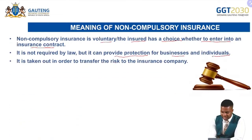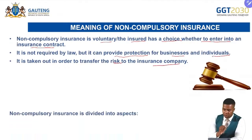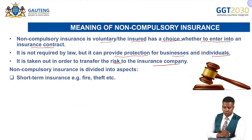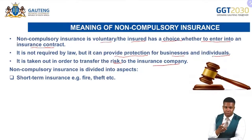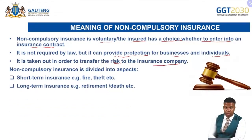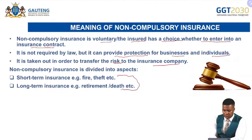Non-compulsory insurance is taken out to transfer the risk to the insurance company. It is divided into two types: short-term insurance — such as fire, theft, damage, hijacking, and burglary — and long-term insurance, which focuses on retirement or death. It is not compulsory for a business to cover itself against fire or theft, and it is not required by law. Long-term insurance for retirement is also not compulsory for individuals.